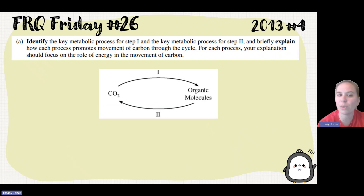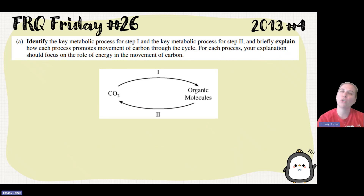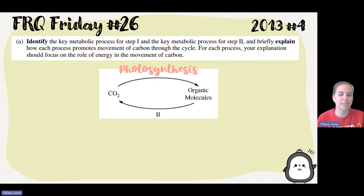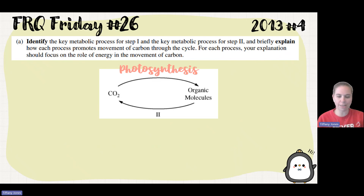Part A is to identify a key metabolic process for step one and a key metabolic process for step two. What process starts with carbon dioxide and ends in some type of organic molecule like glucose? That's just photosynthesis. And then what part uses organic molecules like glucose, breaks them down, and gets carbon dioxide out? Cellular respiration.